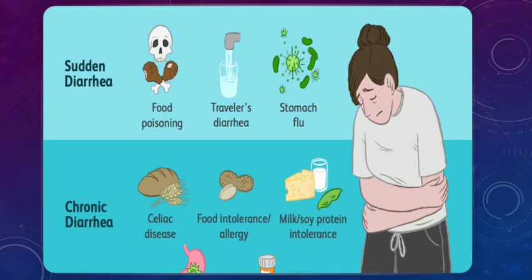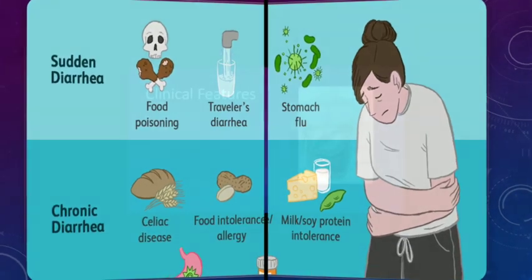There are two types: acute diarrhea and chronic diarrhea. Acute diarrhea patients present with food poisoning, traveler's diarrhea, stomach flu. Chronic diarrhea patients present with celiac disease, food intolerance, allergy, and soy protein intolerance.